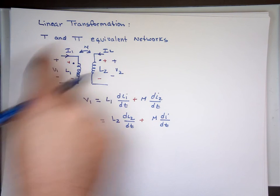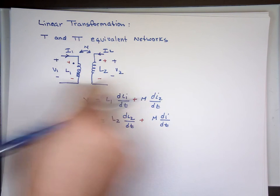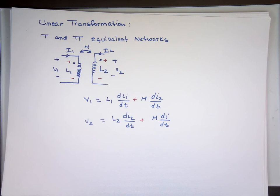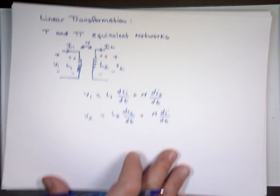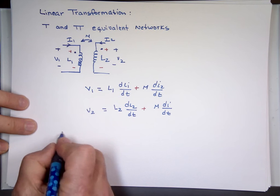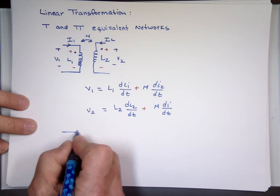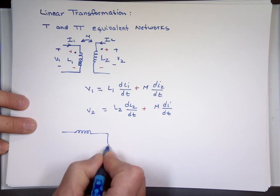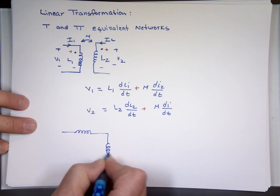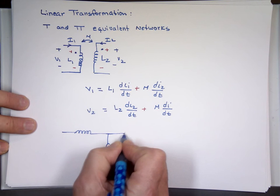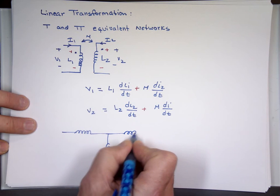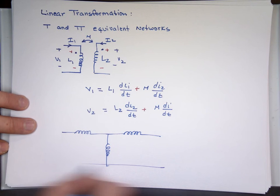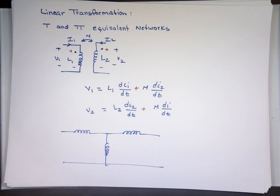I'm trying to replace this whole circuit with a T-equivalent circuit. I don't like mutual inductance; I don't want to deal with them. So if I want to take this and replace it with inductors in a T configuration — that's why we call it T, because it looks like the letter T.